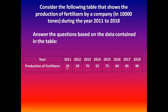The production values are: 2011 contains 35 tons, 2012 contains 50 tons, 2013 contains 70 tons, 2014 contains 55 tons, 2015 contains 75 tons, 2016 contains 60 tons, 2017 contains 85 tons, and 2018 contains 90 tons.